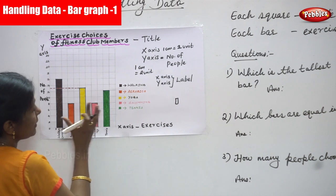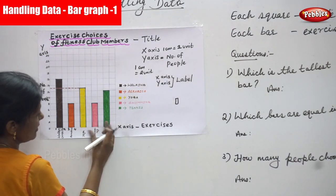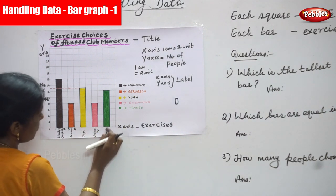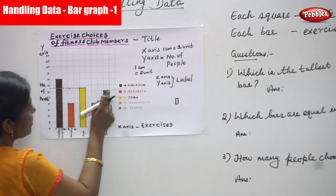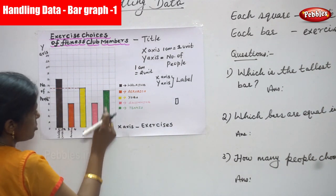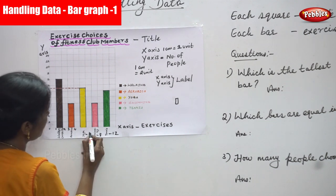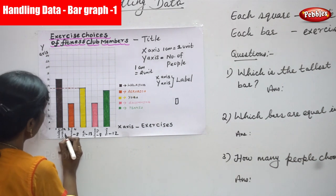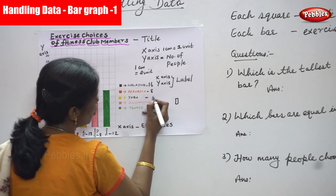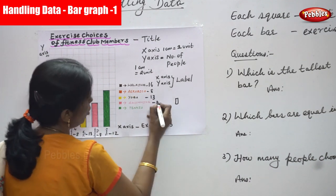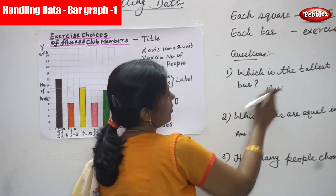Using different colors gives a clear idea and clear information; the diagram looks attractive and nice. Tennis was chosen by 12 people. So: walking — 16 people, aerobics — 8, yoga — 13, swimming — 8, tennis — 12. These are the number of people who chose different exercises.